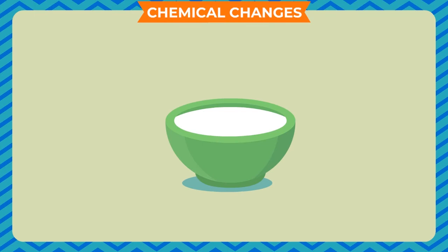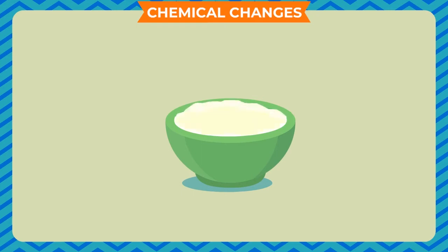To show that formation of curd is a chemical change: mix half a spoon of curd in a bowl of warm milk and leave it for a few hours. Observe it — the milk has changed to curd. The curd so formed cannot be changed back to milk. Hence, curdling of milk is a chemical change.